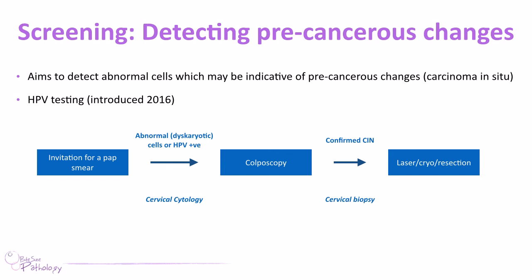At colposcopy, a gynaecologist visualises the cervix and looks for any abnormal changes, particularly around the transformation zone, and takes biopsies from any suspicious areas. These are sent to a pathologist — we take what's called a cone biopsy — and the pathologist looks down the microscope for any new epithelial changes. If a precancerous lesion is found, the patient is invited for treatment, which can include laser therapy, cryotherapy, or in some cases resection of that area.